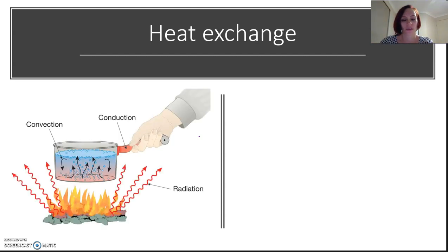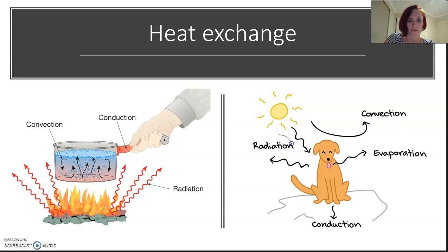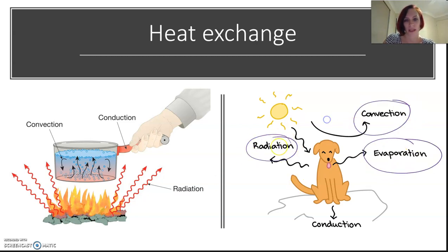Year 9 science taught you a lot about heat transfer — conduction, convection, radiation — and how temperature changes affect particles. We exchange heat through conduction, convection, radiation, and evaporation. We have radiation going out, we can evaporate, and we cool ourselves down using convection and conduction.